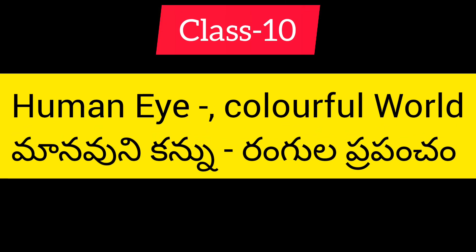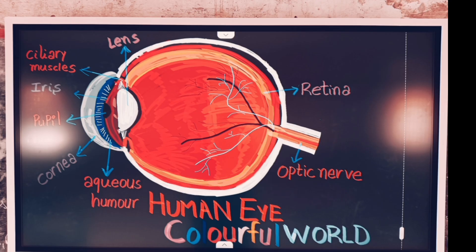Class 10 Human Eye and Colorful World — Manavuni Kannu Rangula Prapancham. The human eye is one of the most important sense organs. It enables us to see the objects and colors around us. Let us discuss the parts of the human eye.